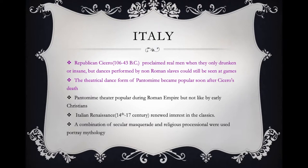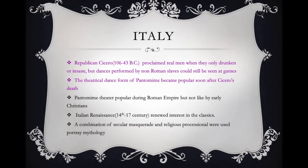Dance history is not linear — it is a collection of stories based on societal and political events. If something happens in a society, it's going to affect the people, and part of that effect are the dance forms that are developed. We also revisited Cicero's attitude towards dance, and after his death we see an influx in the pantomime, which was not liked by early Christians — reminding us how attitudes are shaped by culture.